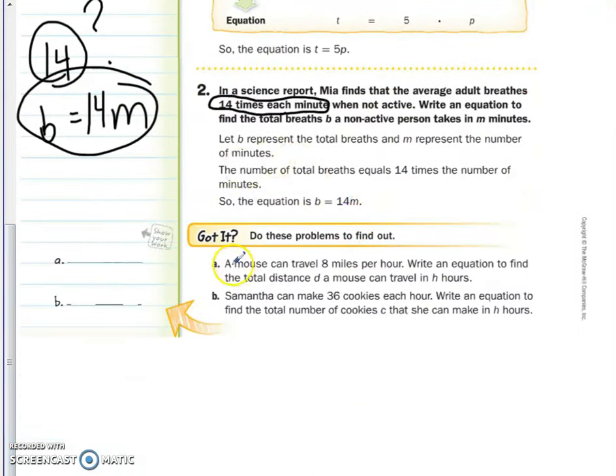So here we have letter A. A mouse can travel 8 miles per hour. Write an equation to find the total distance D a mouse can travel in H hours. So if we know the mouse can travel 8 miles per hour, H stands for hour and per means multiply. So that's why the correct answer is D equals 8H.